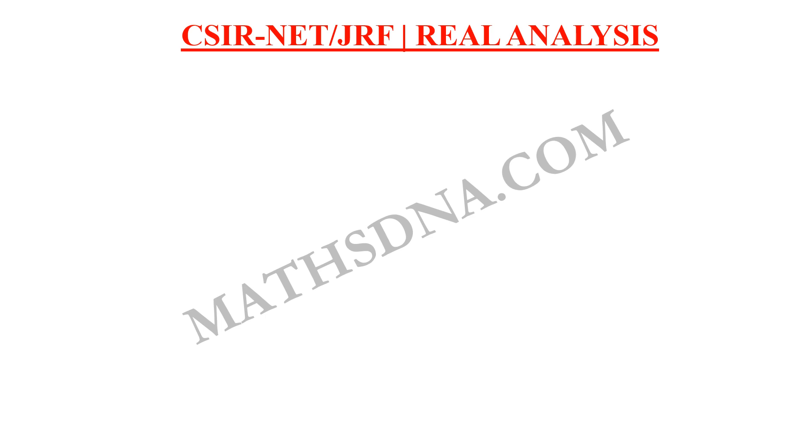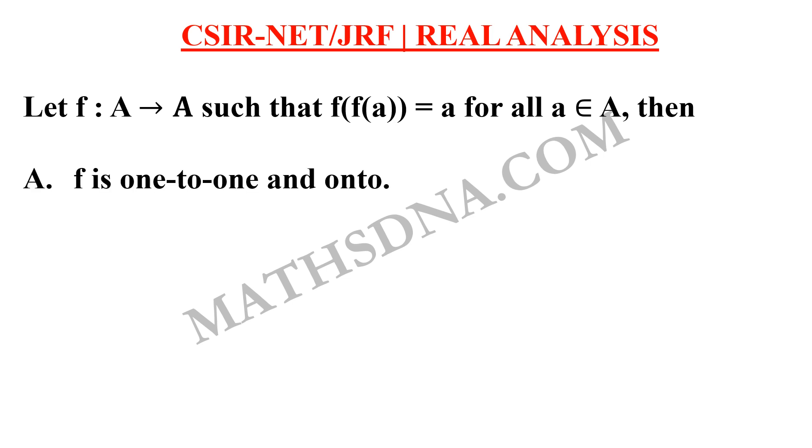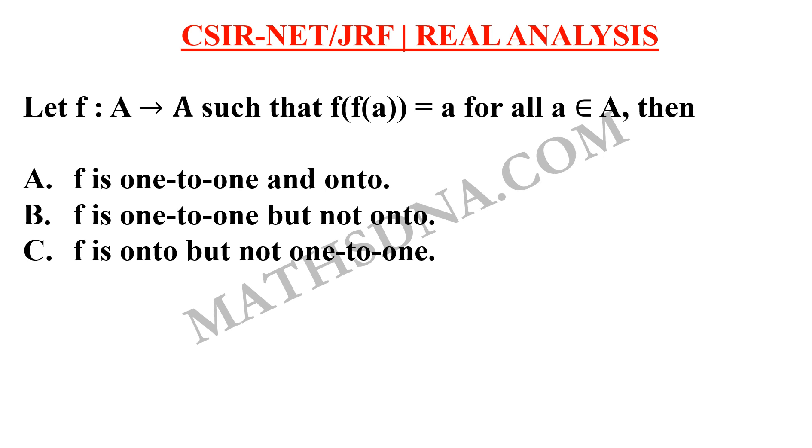Moving on to the question: Let f be a function from A to A such that f(f(a)) equals a for all a belongs to A. Then the options are: f is one-to-one and onto, f is one-to-one but not onto, f is onto but not one-to-one, and f is neither one-to-one nor onto.